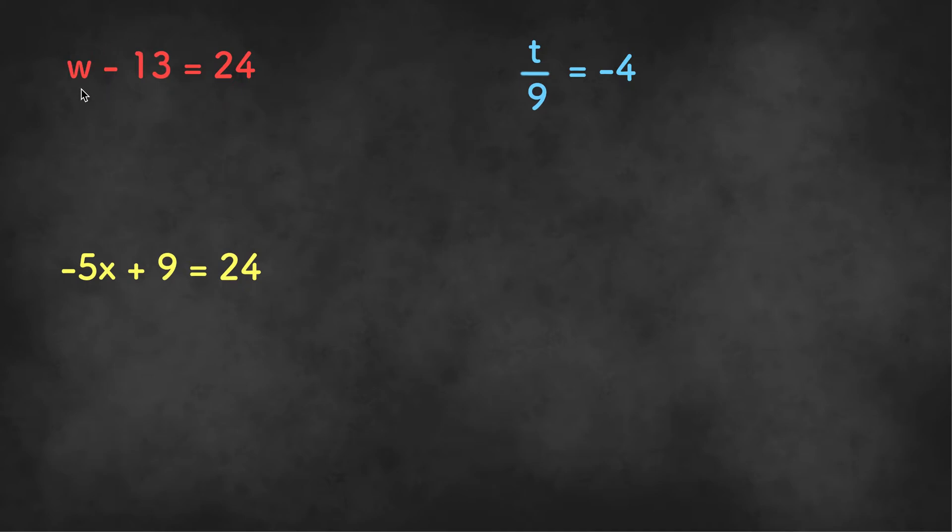The first example we have here says w minus 13 equals 24. When we have an equation like this, we must isolate the variable, which in this case is w. We need to isolate the variable by getting rid of the negative 13. To do so, we have to use inverse operations. The inverse operation of subtraction is addition, so we should add 13.